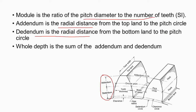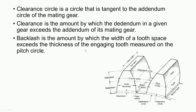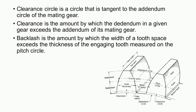Clearance is the amount by which the dedendum in a given gear exceeds the addendum of its mating gear, or the amount by which the width of the tooth space exceeds the thickness of the engaging tooth.